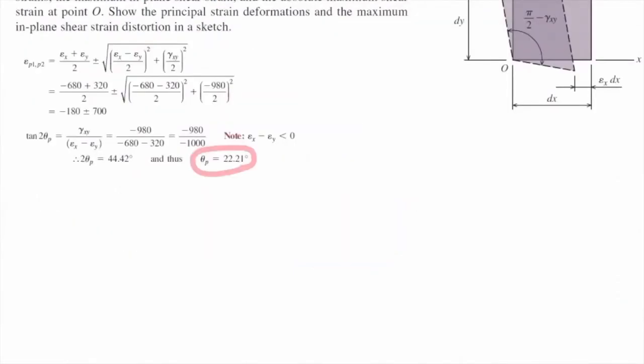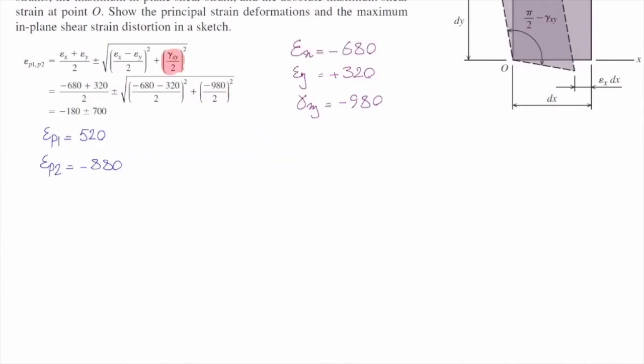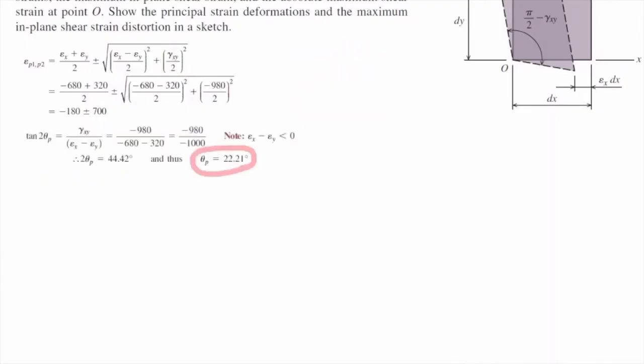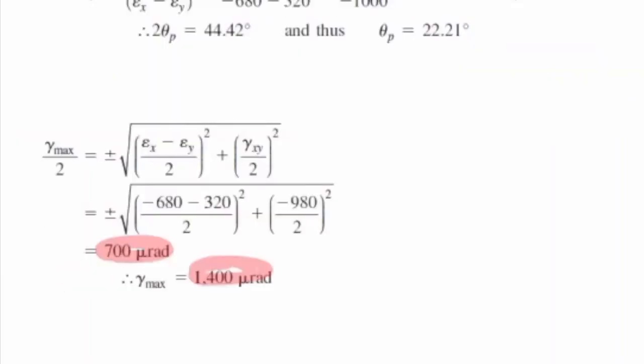Similarly, I can determine the maximum shear strain. In this case, the maximum absolute values and the maximum in-plane shear strains are equal to each other. They are equal to each other. Why? Because look at the principals. They have opposite signs. So maximum in-plane is equal to the maximum absolute. And that would be equal to the radius of the circle. So radius is this one. I plug the values into this equation. That gives me 700.